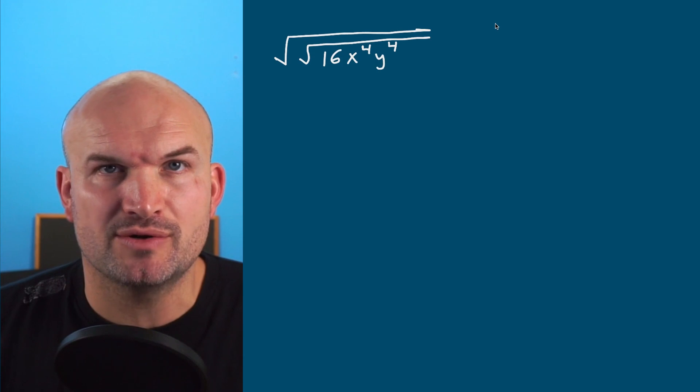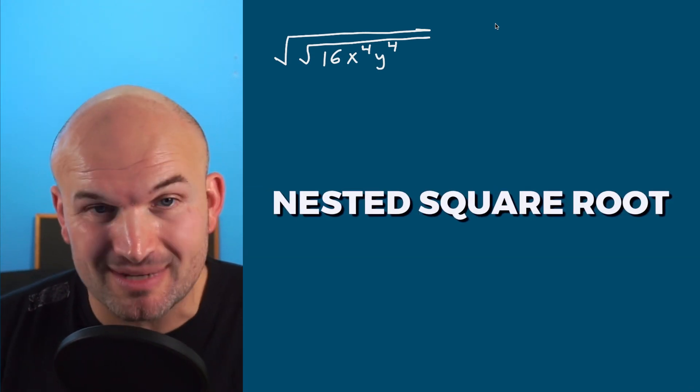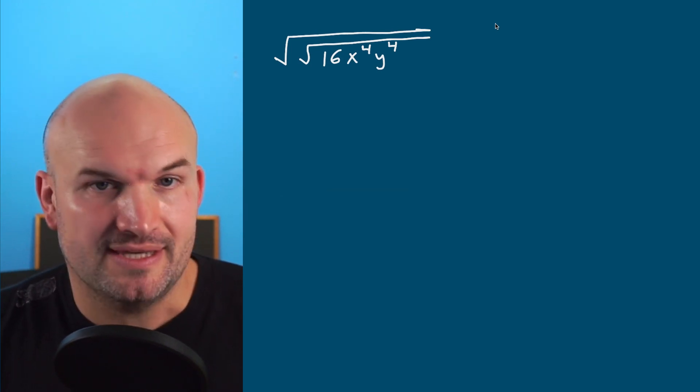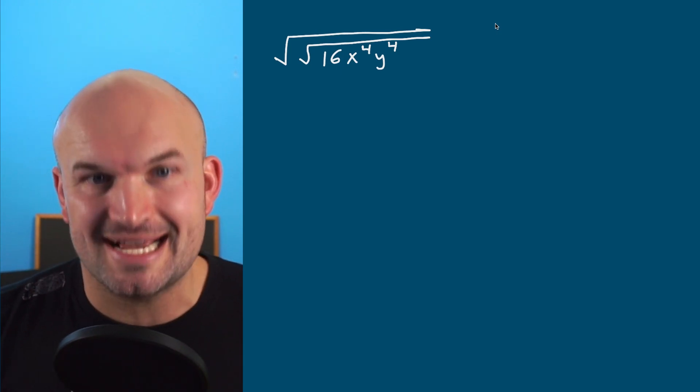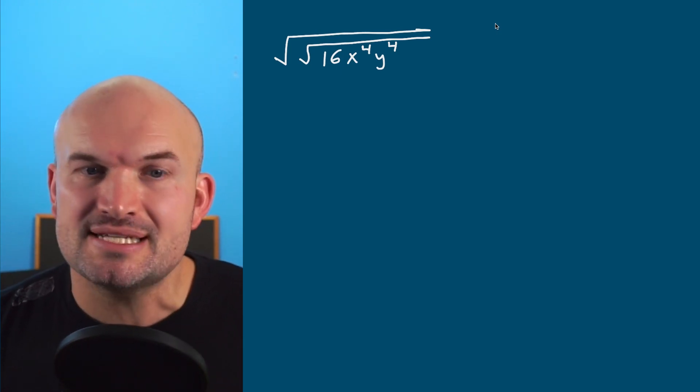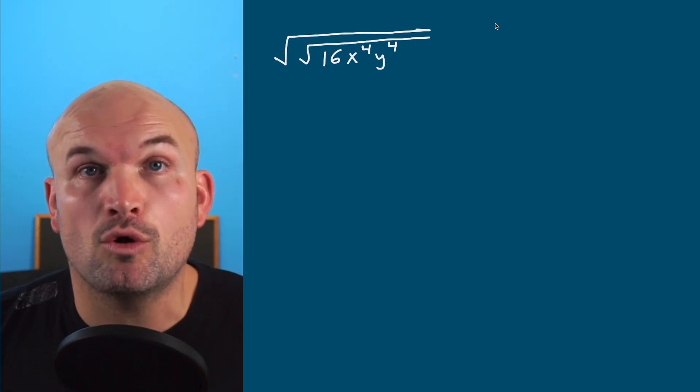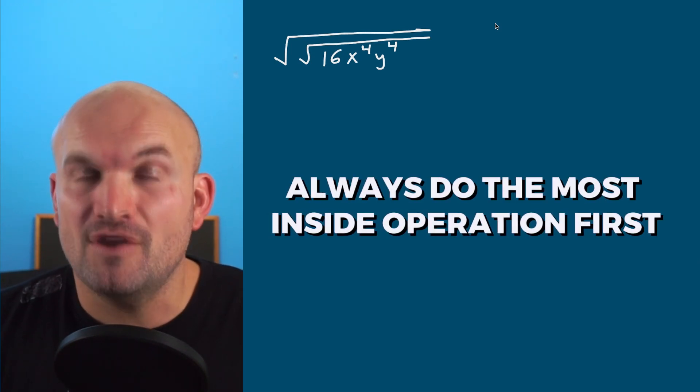Now in this example, what we have is a square root of a square root, which is a lot of times we call a nested square root. So we have a square root inside of another square root. There's a couple of different ways to be able to approach a problem like this. The main thing that we want to see from this example is to be able to follow your order of operations properly. One thing that we can take away from understanding the order of operations is to always do the most inside operation first.